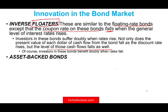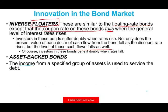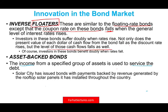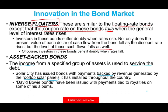Asset-backed bonds are bonds where the interest payments come from a specified group of assets used to service the debt. For example, SolarCity issued bonds with payments backed by revenue generated by rooftop solar panels installed throughout the country. Sometimes these are called income bonds or revenue bonds — your payment comes from those revenues. David Bowie bonds have also been issued with payments tied to royalties on some of his albums. This is another type of asset-backed bond.